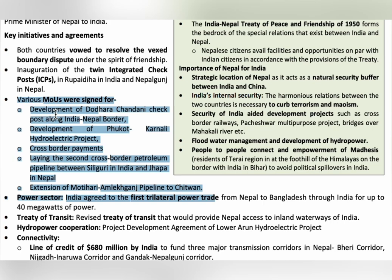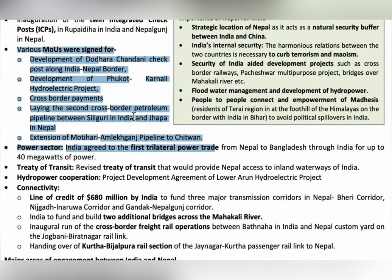Key MoUs signed include the development of Dodara Chandani check post along the India-Nepal border, development of the Phukot Karnali Hydroelectric Project, cross-border payments, and the laying of the second cross-border petroleum pipeline between Siliguri in India and Jhapa in Nepal. The first cross-border petroleum pipeline was between Motihari and Amlekganj. The first pipeline extension was also made to Chitwan. India also agreed to the first trilateral power trade from Nepal to Bangladesh through India for up to 40 megawatts.